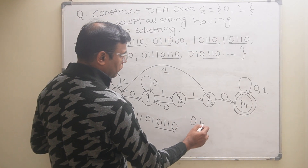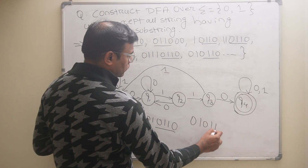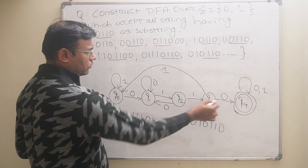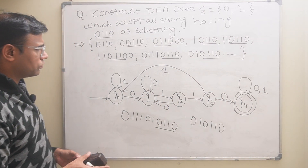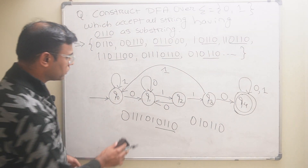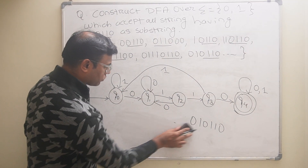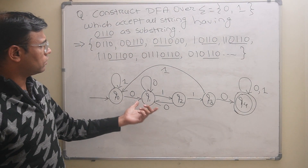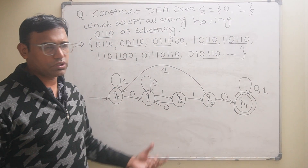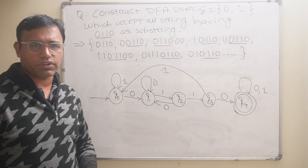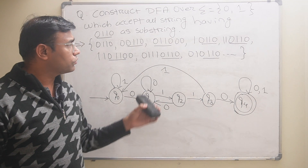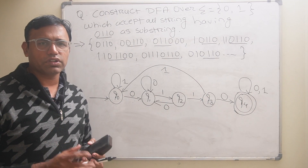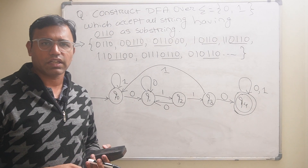The last possibility is 0,1,0,1,1,0. We have covered almost all the possibilities and this is the final DFA which will accept 0,1,1,0 as a substring. I hope you understand this problem. If you like the video, please subscribe, like, and share. Thank you.